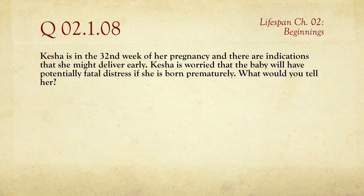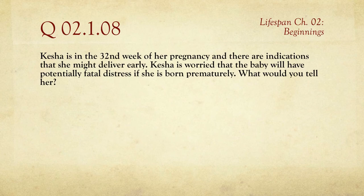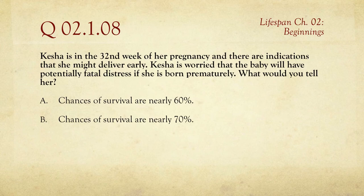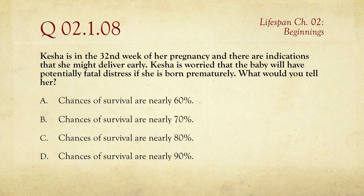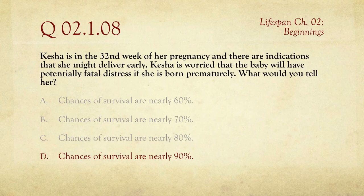Question eight: Keisha is in the 32nd week of her pregnancy — two months early, since pregnancy is normally 40 weeks — and there are indications she might deliver early. She's worried about potentially fatal distress. The answer is D: at 32 weeks, chances of survival are nearly 90%, which is encouraging, though it would be nice if they were higher.